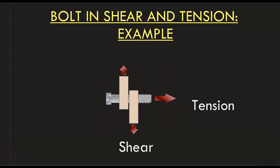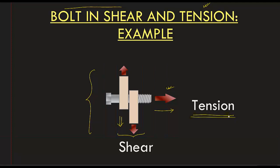Hello friends. Today we will do an example in which a bolt is under shear as well as under tension. In this situation, two forces are acting on the bolt — one force trying to pull the bolt, causing tension, and another force perpendicular to the bolt trying to shear it and slip the two planes of the bolt, causing shear action. So this bolt is under shear as well as under tension.